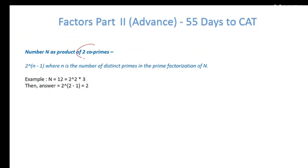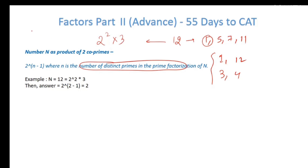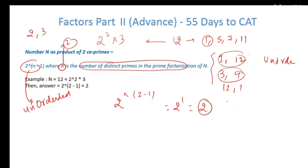Number as a product of 2 co-primes. For 12 = 2² × 3, there are 2 distinct prime factors (n = 2). The solutions are (1, 12) and (3, 4). The number of unordered ways = 2^(n−1) = 2^(2−1) = 2. For ordered solutions (where (1,12) and (12,1) are different), the count = 2^n = 2² = 4. And that covers factors for CAD.